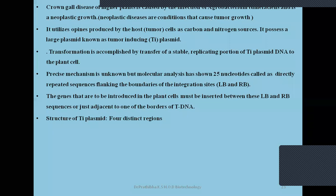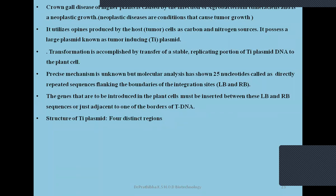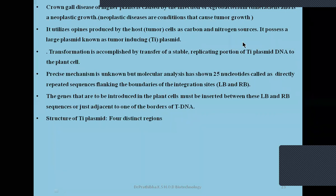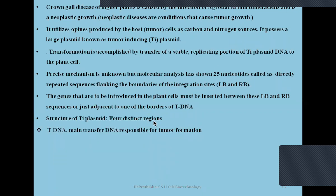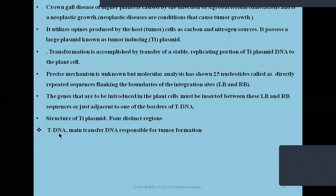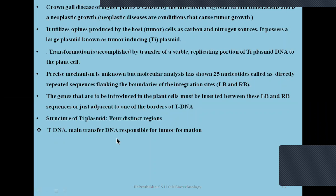As I discussed yesterday, in Agrobacterium tumefaciens, which is a bacteria, there is the presence of a Tumor Inducing plasmid which is 200 kilobase in size. In that, yesterday I discussed four distinct regions which play a very important role for tumor induction — that is nothing but the crown gall. The first distinct region is the T-DNA, which stands for Transferred DNA. This is the part of the Ti plasmid responsible for causing the tumor or tumor induction.